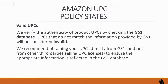Valid UPCs — this is where a lot of people come with a big question. Amazon's policy states: we verify the authenticity of product UPCs by checking the GS1 database. UPCs that do not match the information provided by GS1 will be considered invalid. We recommend obtaining your UPCs directly from GS1 and not from third parties selling UPC licenses, to ensure the appropriate information is reflected in the GS1 database.